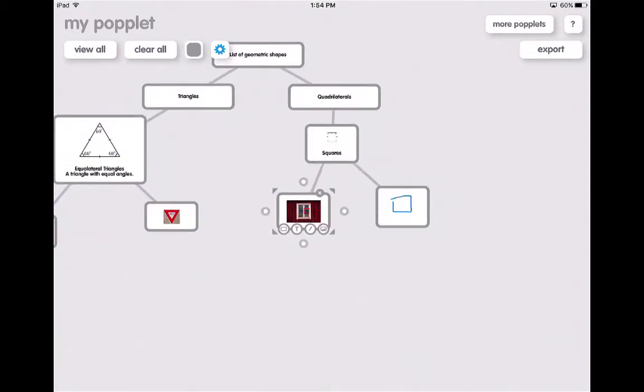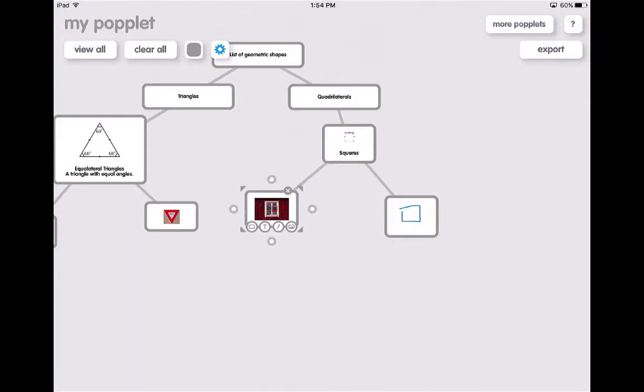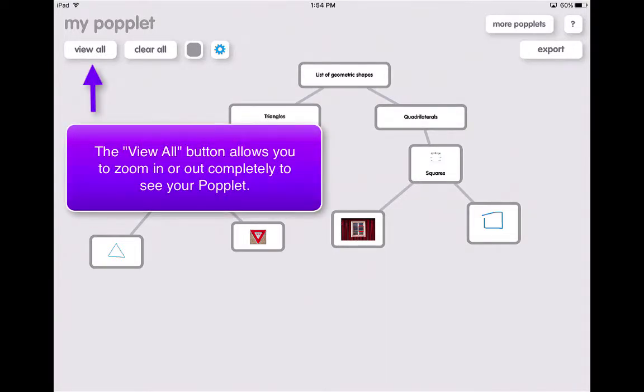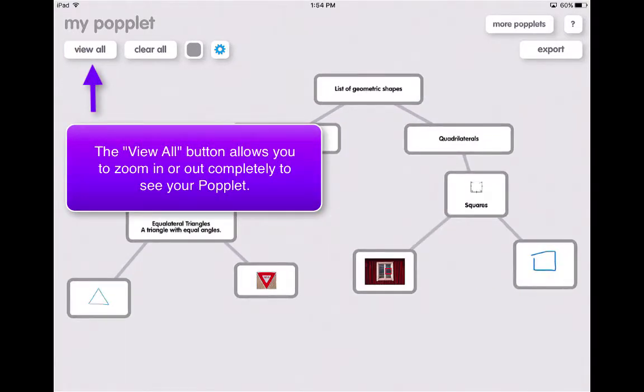So right now what I have is a really quick, easy, simple concept map of geometric shapes. They can be way more complex than this, but this is one of the easiest and quickest ways to make a mind map. Now there's all kinds of options. I can click the view all, and it's actually going to zoom it in so that you can see all of them at the same time.